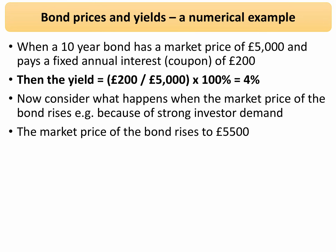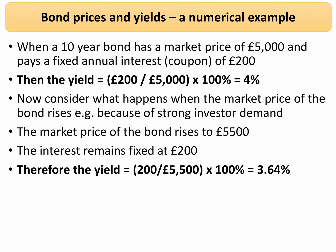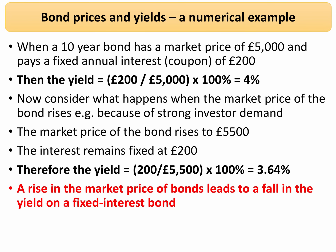Let's assume the price goes up from £5,000 to £5,500 — the bond is now trading 10% above the issue price. Although the price has changed, the interest, or coupon, doesn't change; it stays fixed at £200. So the yield is £200 divided by £5,500, giving a yield of 3.64%. The market price of the bond has gone up, causing the yield to fall — confirming the inverse relationship.